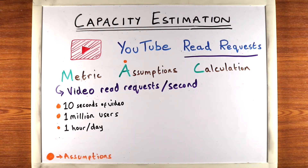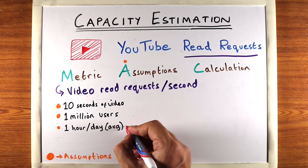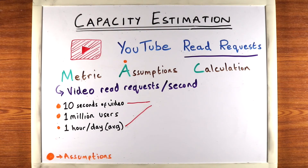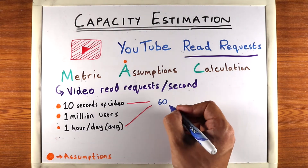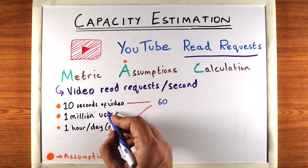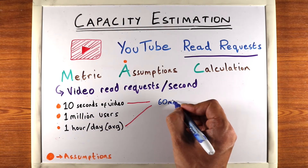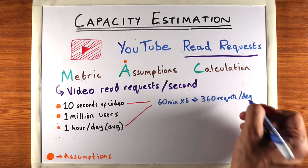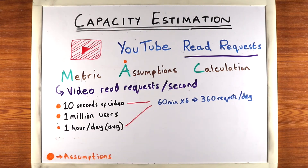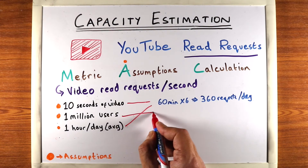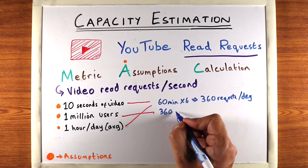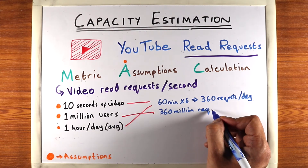So we have one hour per day and 1 million users. Using these two assumptions, we can figure out how many requests each user makes in a day. One hour a day is 60 minutes, and each minute has six 10-second slots. So 60 minutes times 6 equals 360 requests per day per user. Multiplying 360 requests by 1 million users gives us 360 million requests per day for the entire system.